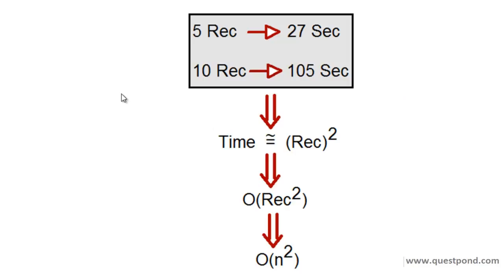Let us try to understand this definition with an example. Assume that we have an algorithm. For that algorithm, if we give five records it takes 27 seconds. If we increase the records to 10 records it takes some 105 seconds. If we look at the relationship, the time required to process by this algorithm is the number of records squared. When the records were 10 it took approximately 100 seconds, and when they were 5 it took approximately 25 seconds. The relationship is that the time required by this algorithm is the square of the input data.